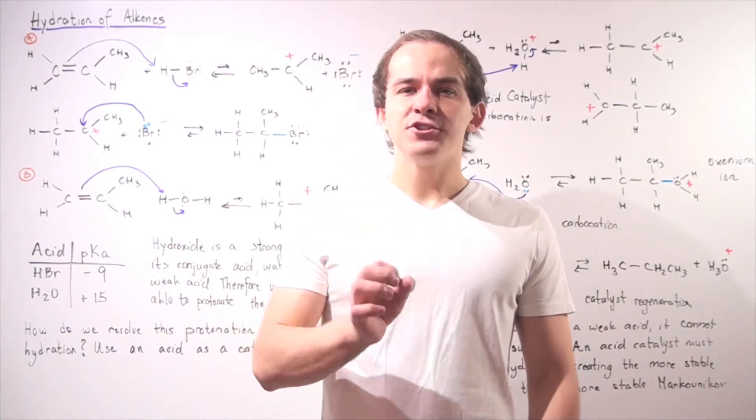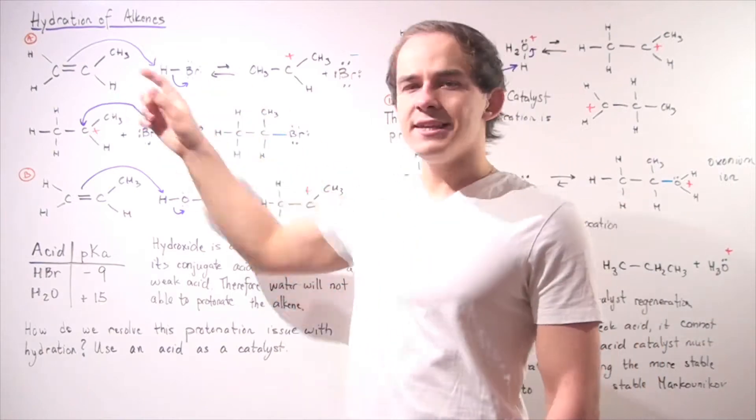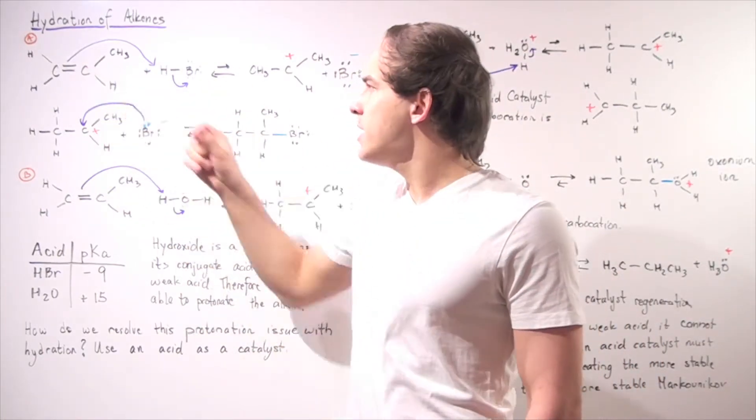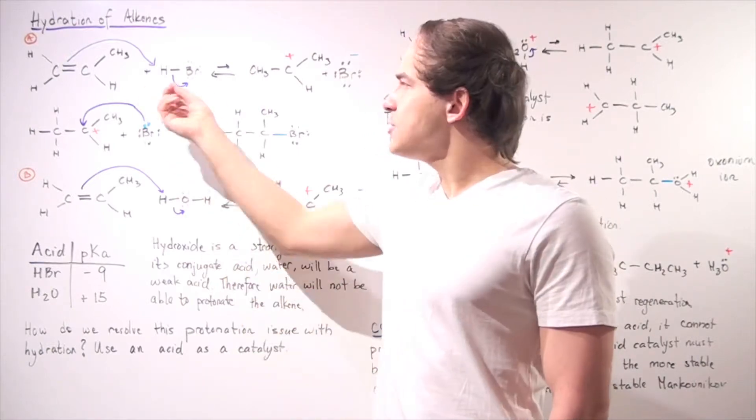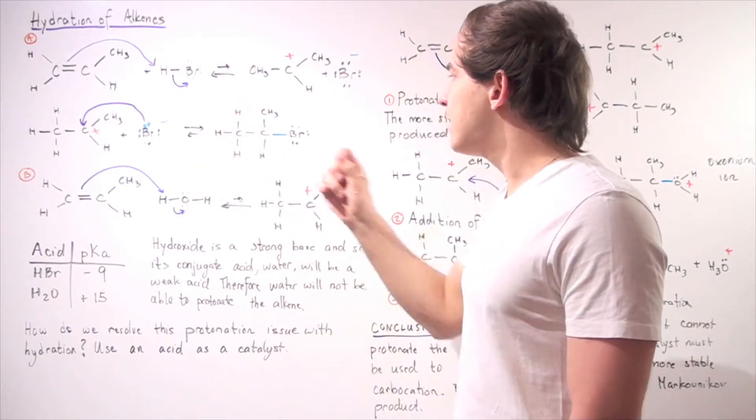So let's recall what a hydrohalogenation reaction is. Let's look at the following two alkenes. Let's suppose we have an asymmetrical alkene shown here, and we add an HBr molecule.